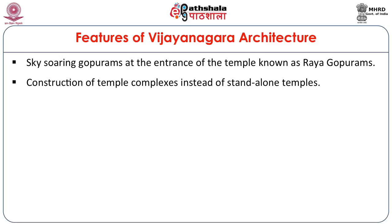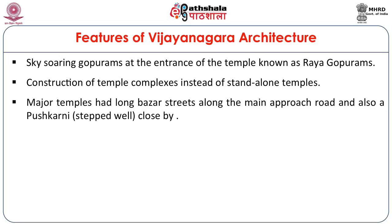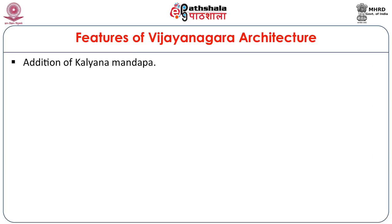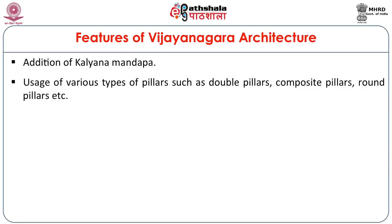Construction of temple complexes instead of stand-alone temples, most of them having a separate Devi or Amman shrine. The major temples had long bazaar streets along the main approach road and also a Pushkarni close by. Lord Hanuman was the most favourite subject of sculptures at Hampi because Hampi is believed to be located at the site of the ancient Kishkindha kingdom of the Vanaras. The addition of Kalyanmandaps, and usage of various types of pillars: the double pillars, the composite pillars, the lat-turn pillars, the Yali pillars.